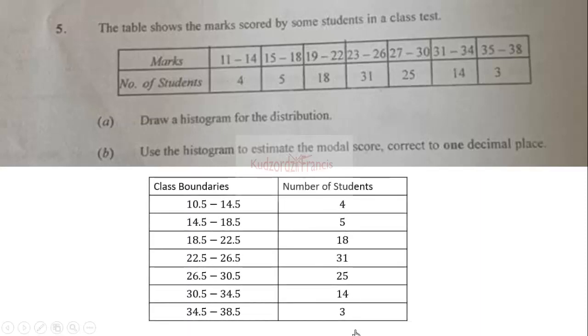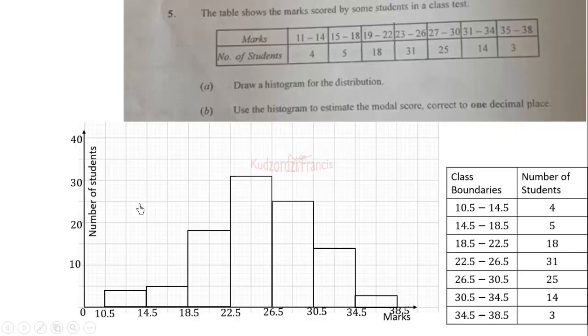The number of students correspond to each class boundary as it was given to us in the question. We now plot the class boundaries against the number of students, and that will give us this histogram. You can see the height of each of the bars correspond to the frequencies or the number of students that scored those marks.